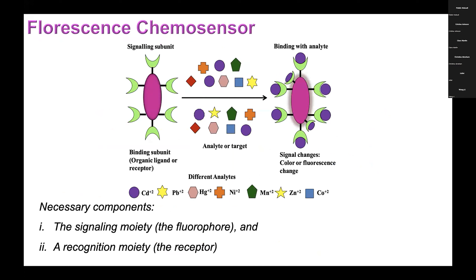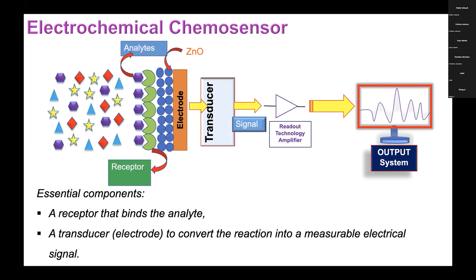The transducer emits the signal in the form of electrical and optical. In the electrochemical sensor, the essential components are a receptor that binds the analyte and a transducer to convert the reaction into a measurable electrical signal. The electrode, like zinc oxide, is used as a transducer. It amplifies the signal, which is then sent to an output device such as a computer or another electronic device.